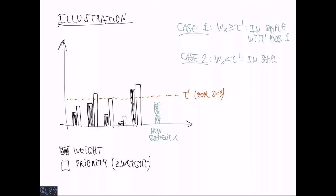Otherwise, if wx is strictly less than tau, so this is the case here. Then, depending on the value of alpha x, we may or may not end up in the sample. And if you work it out, it turns out that x ends up in the sample if and only if alpha x is less than wx over tau, which happens with probability wx over tau.